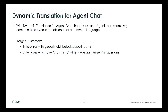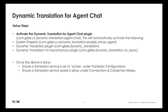Dynamic translation has its own plugin inside Agent Chat, so you would need to download and install that plugin. There is also a system property that you would have to enable as part of that. Once you've done the plugin setup, you need to set up a translation service — pick the right one you want to use, make sure it's active, and also set up a translation service record.